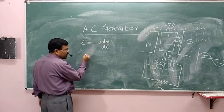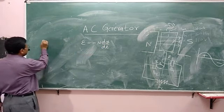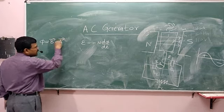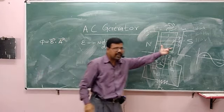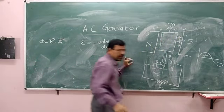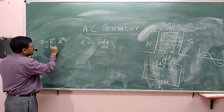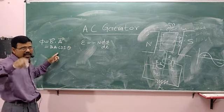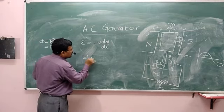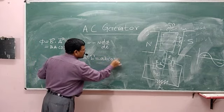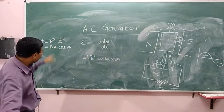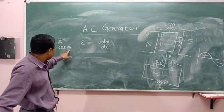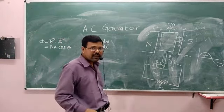The flux Φ is equal to B·A, which is B·A·cos θ. B is the magnetic field, A is the area of the coil, and θ is the angle between the direction of the magnetic field and the area vector. The area vector is always perpendicular to the plane of the coil.